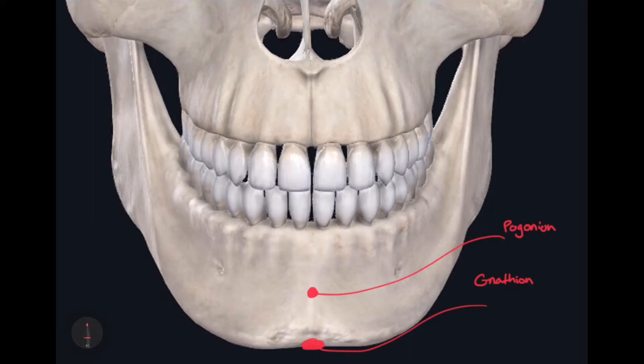Now if we continue going superior, underneath the two inferior central incisor teeth, we have our next craniometric point. If we go up to where these two superior central incisor teeth connect down — where this articulation is found — this is called the incision.